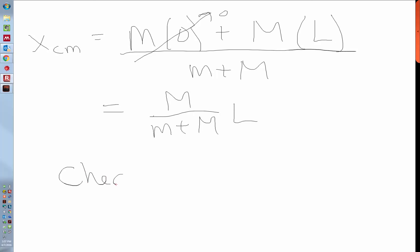So let's check. In the limit where big M is much, much bigger than little m, then the center of mass is essentially at where the big mass is. If the two masses are equal, then the center of mass is right in the middle, what we would have guessed.